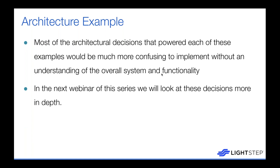Most of these architectural decisions were confusing and complicated. The point is it's very hard to split a monolith into microservices without really understanding the limits of the system, the overall functionality, and how different pieces interact with each other. Understanding dependencies — whether you're in a monolith or microservice architecture — is super important.